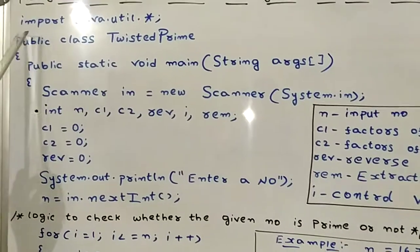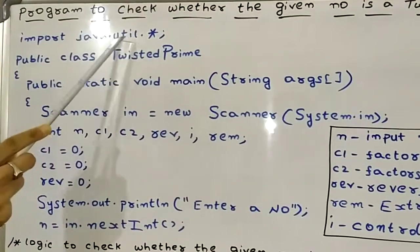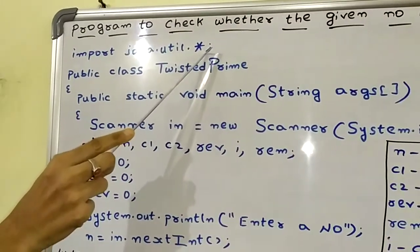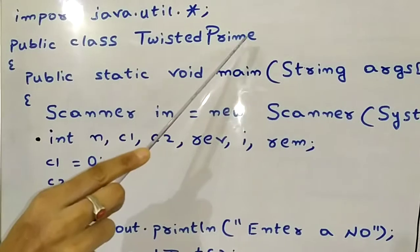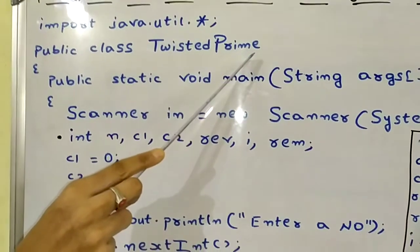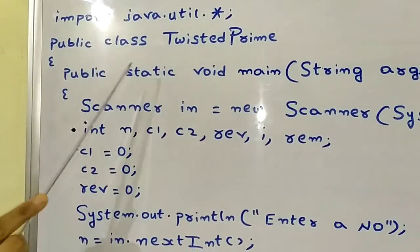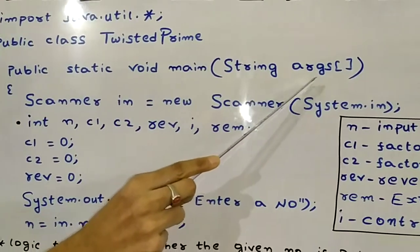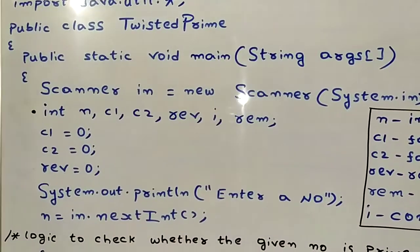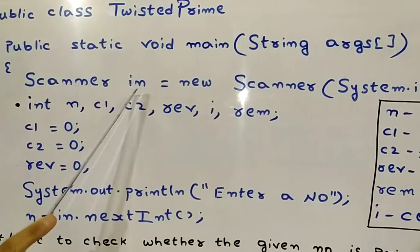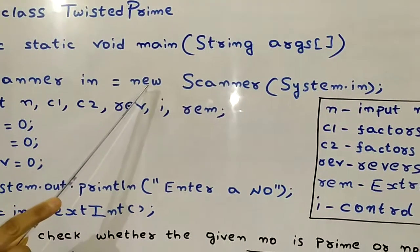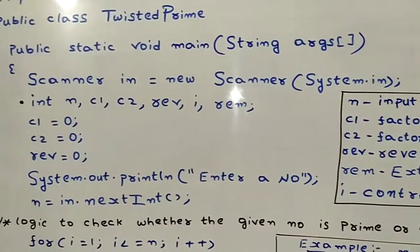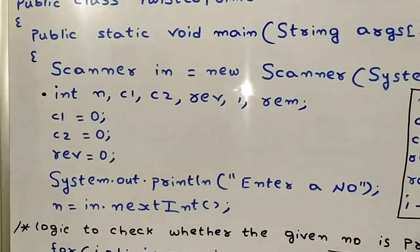Let us see where those steps are implemented and how they work. First, import java.util.* which imports the java.util package. Public class TwistedPrime is the declaration of the class. Public static void main(String[] args) is the declaration of the main function. Scanner sc = new Scanner(System.in) is the creation of the scanner class object.